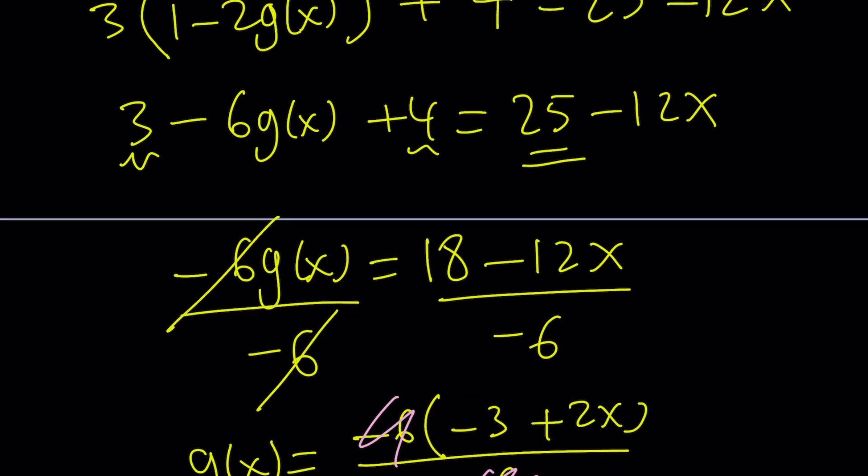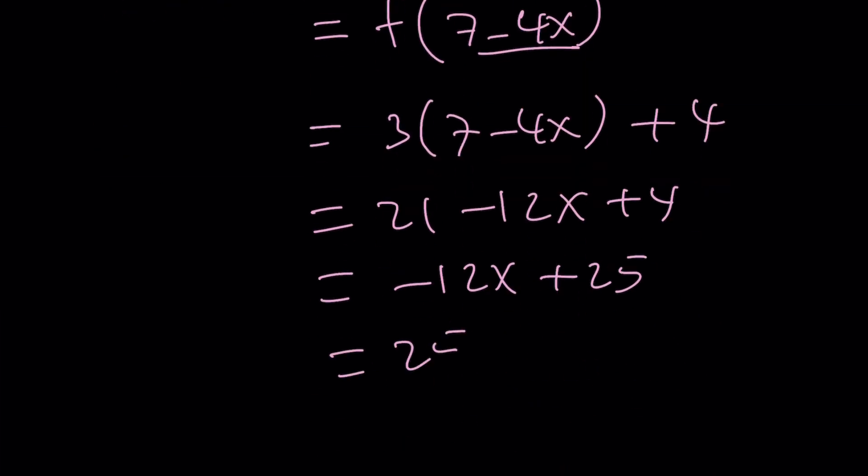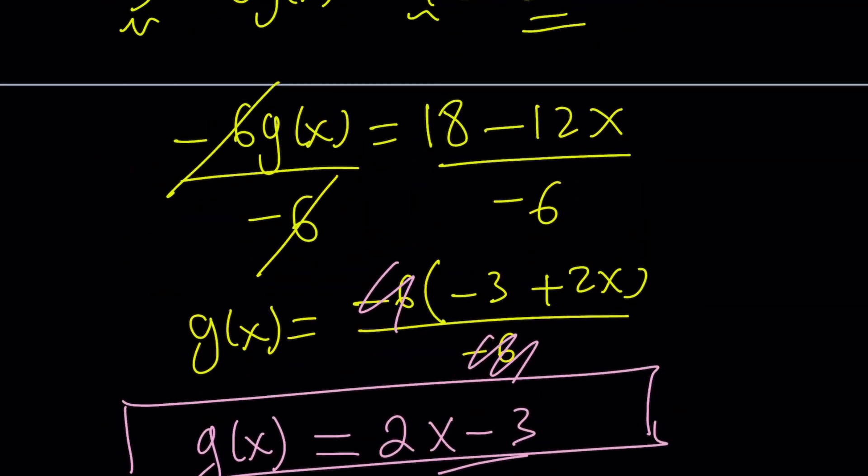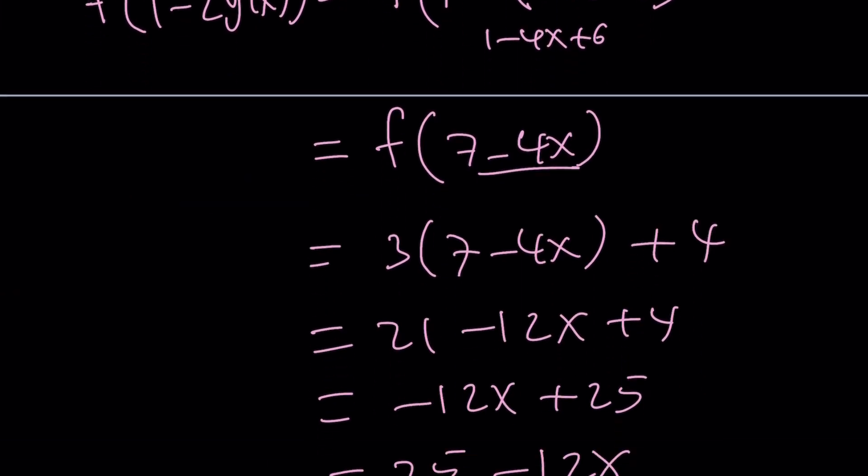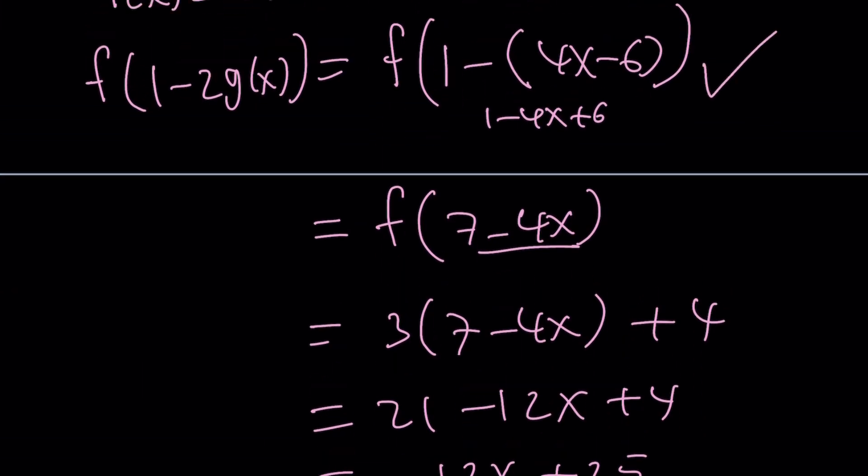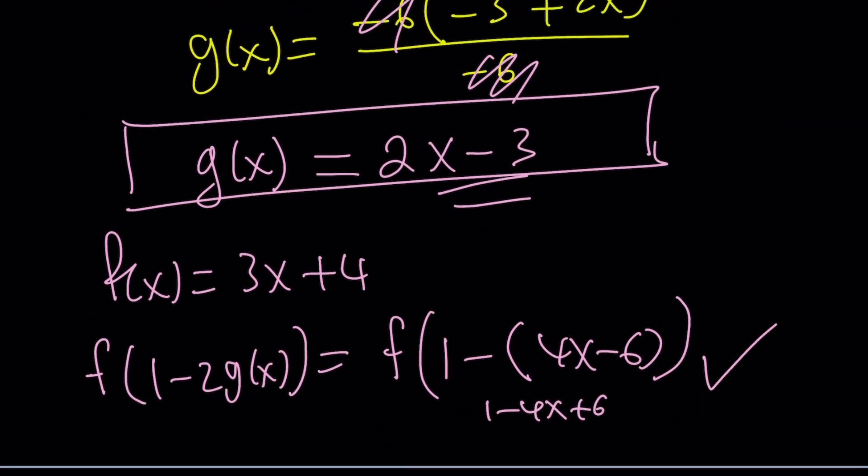So our answer checks quickly. And we got the right answer. And this is going to be our, what? This is going to be the f of whatever that is. Okay? So our solution checks. We got g of x as 2x minus 3.